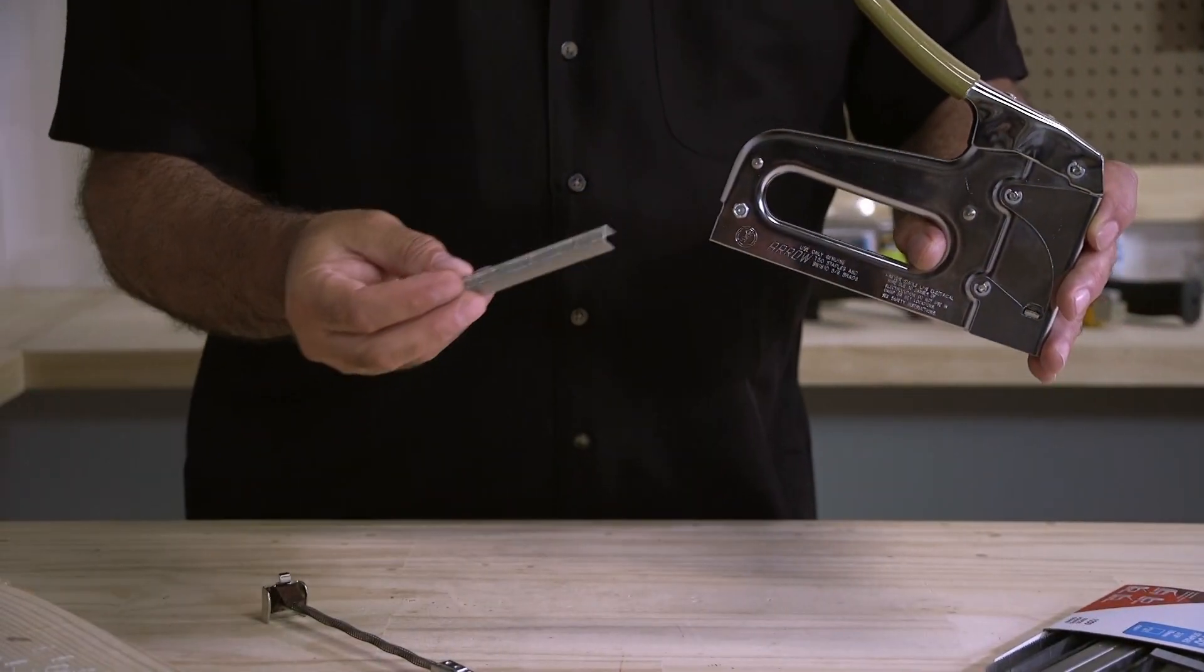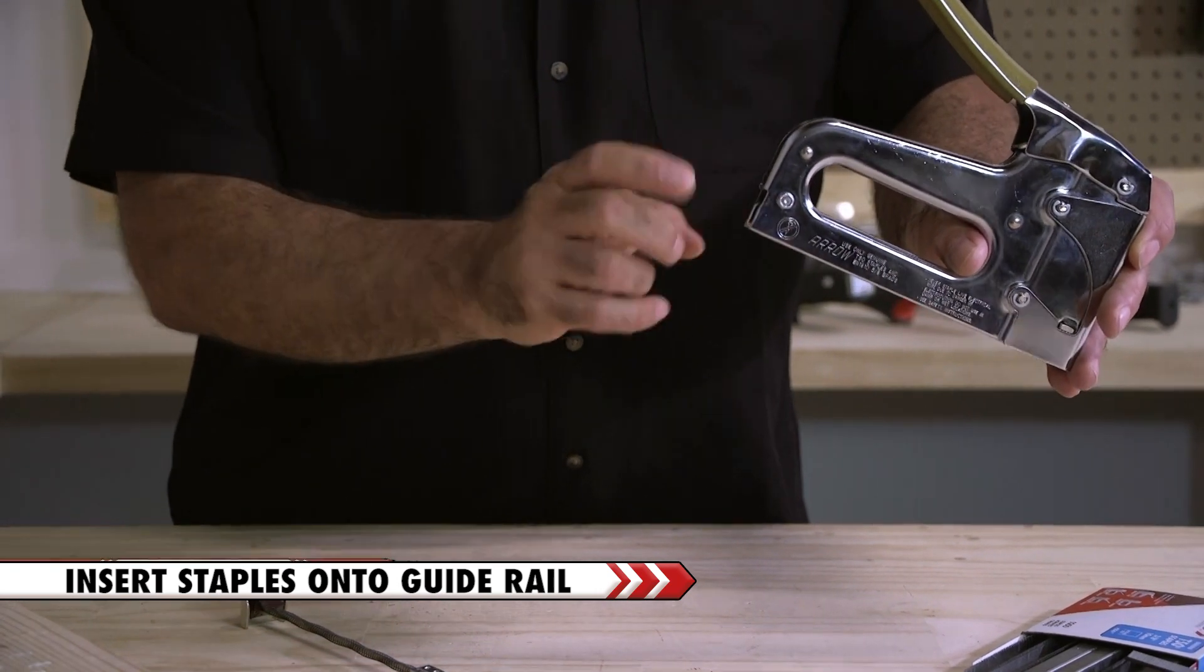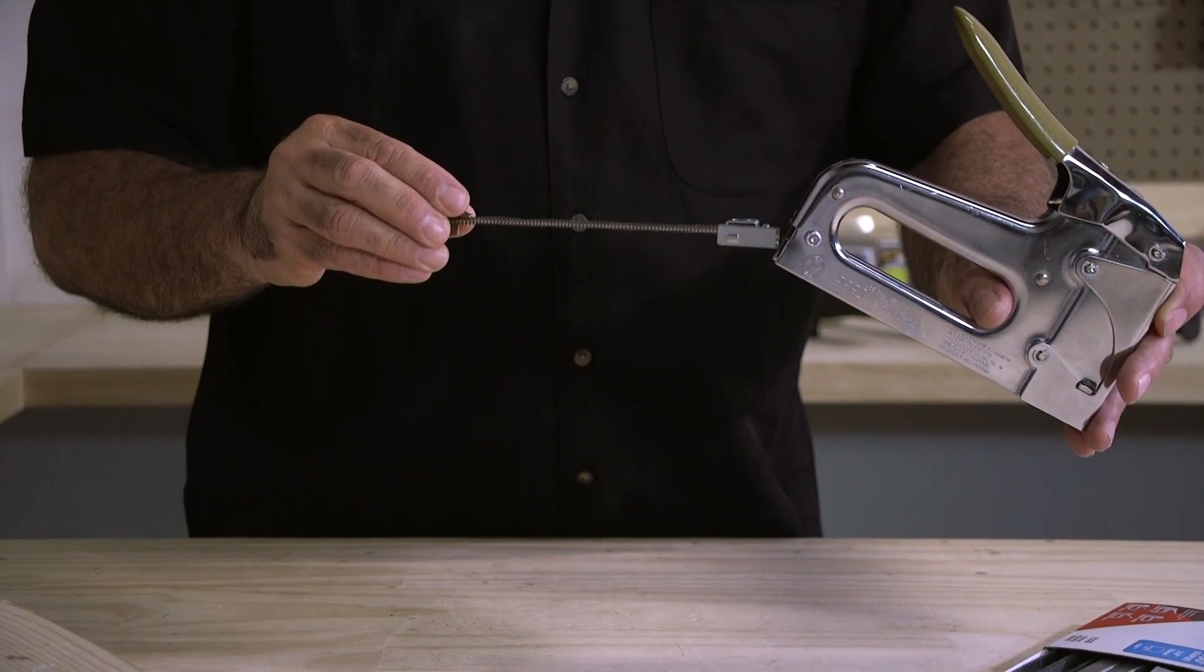Now you can insert the T50 staples. Insert a full strip of staples onto the guide rail, sliding them all the way to the front of the tool.